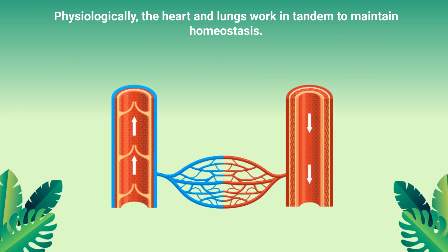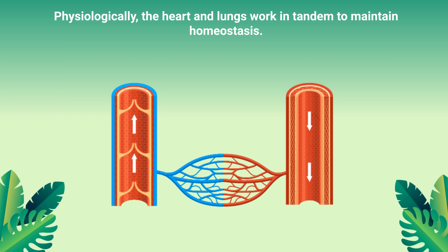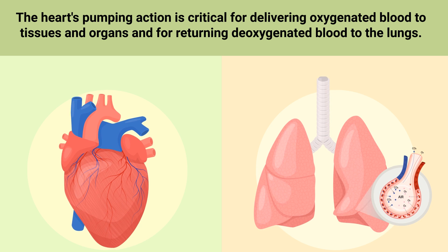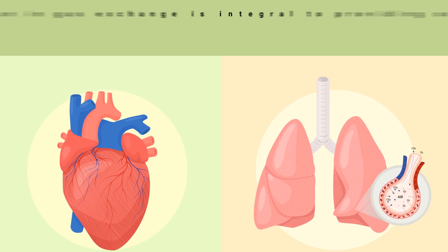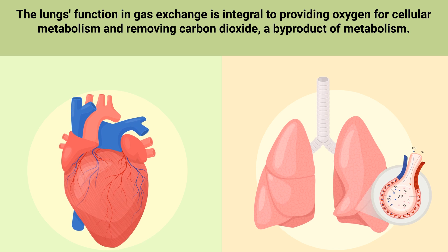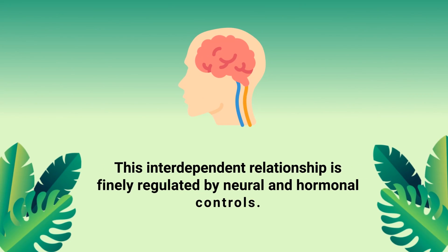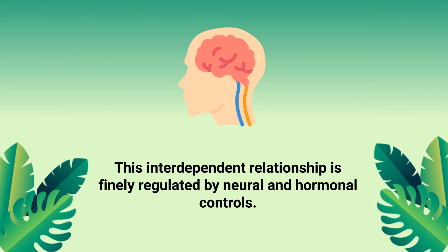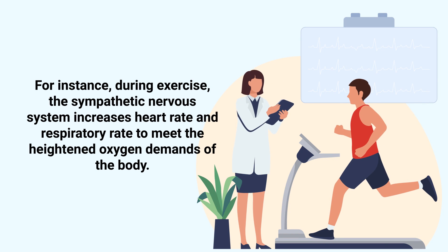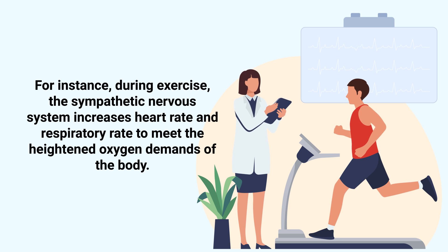Physiologically, the heart and lungs work in tandem to maintain homeostasis. The heart's pumping action is critical for delivering oxygenated blood to tissues and organs and for returning deoxygenated blood to the lungs. The lungs' function in gas exchange is integral to providing oxygen for cellular metabolism and removing carbon dioxide, a byproduct of metabolism. This interdependent relationship is finely regulated by neural and hormonal controls. For instance, during exercise, the sympathetic nervous system increases heart rate and respiratory rate to meet the heightened oxygen demands of the body.